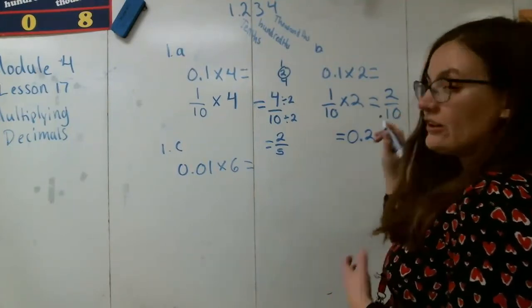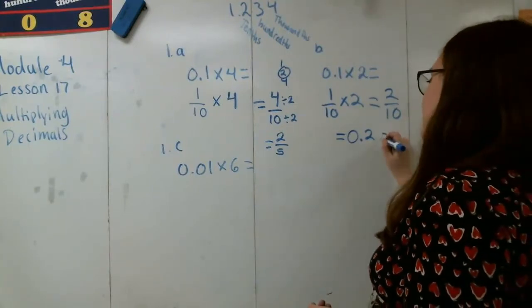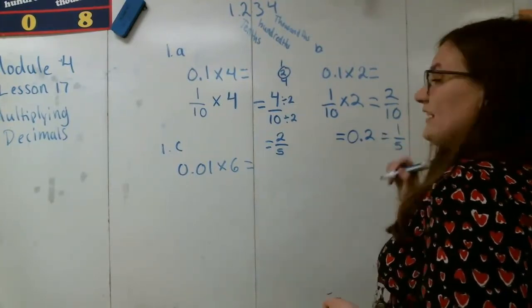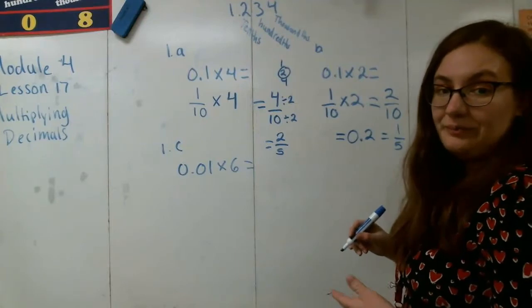Now I can also simplify if I want to — I can think of 2 tenths as 1 fifth as well.